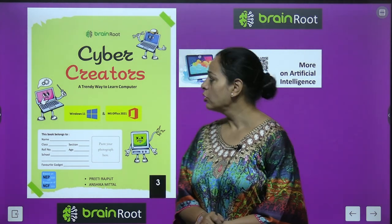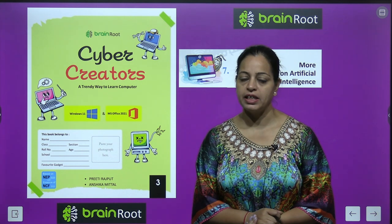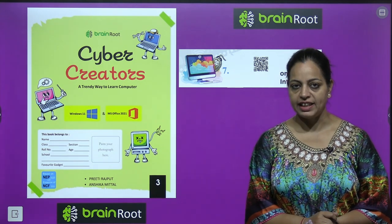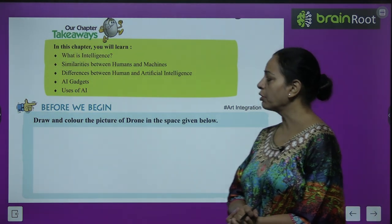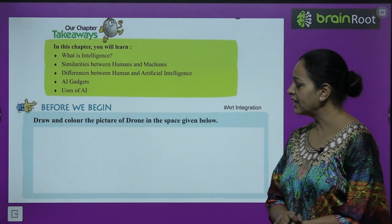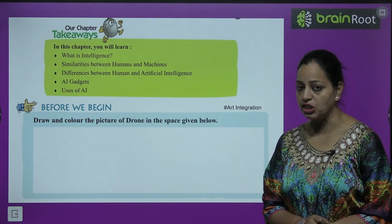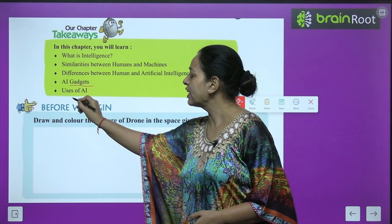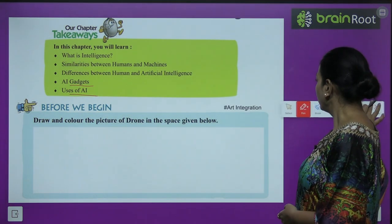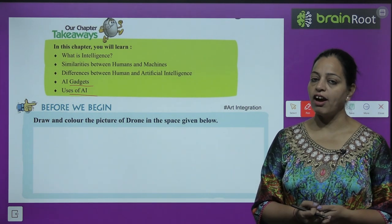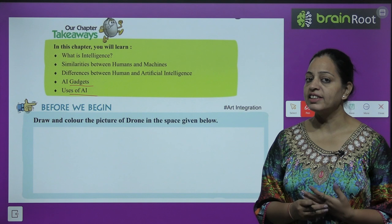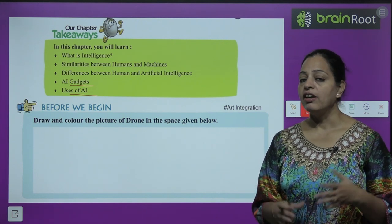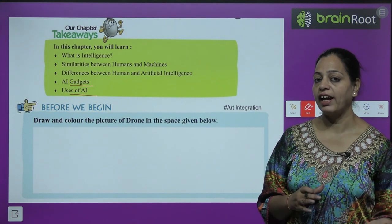Hello kids, this is mentor Neetu, welcome back. We are doing Cyber Creators computer book class 3 by Brain Root. Today we are doing Chapter 7: More on Artificial Intelligence. In this chapter you will learn about what is intelligence, similarities between humans and machines, difference between human and artificial intelligence, AI gadgets and uses of AI.